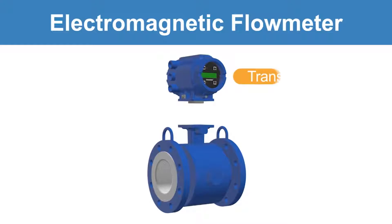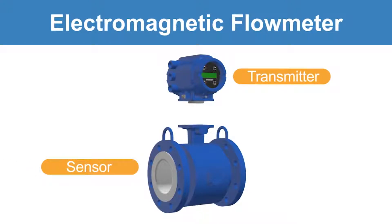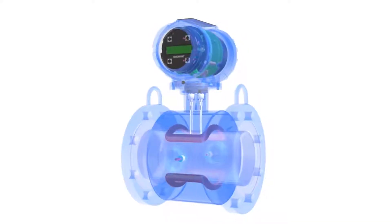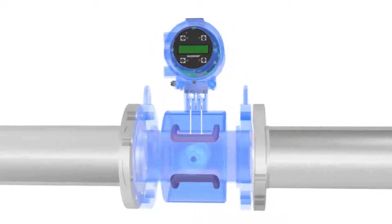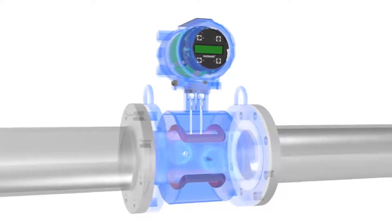Magmeters are comprised of a transmitter and sensor that together measure the flow. The magmeter sensor is placed in line and measures an induced voltage generated by the fluid as it flows through the pipe.